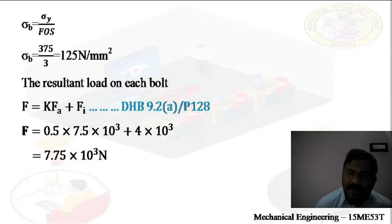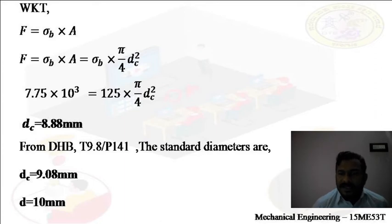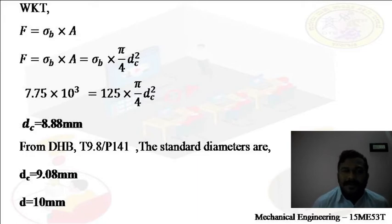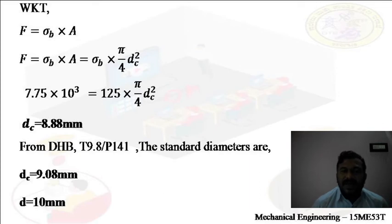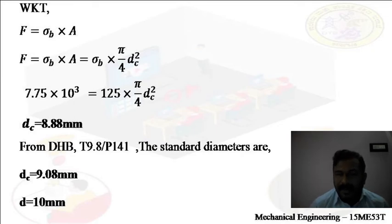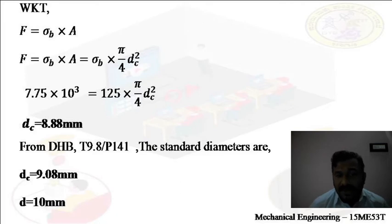Equating resultant load to the load on each bolt: F = σ × (π/4) × dc². Therefore 7.75 × 10³ = 125 × (π/4) × dc². On simplification, dc = 8.88 mm. This is the calculated value. From design data handbook table 9.8, page 141, the standard core diameter closest to 8.88 mm is 9.08 mm, and the corresponding nominal (major) diameter is d = 10 mm.